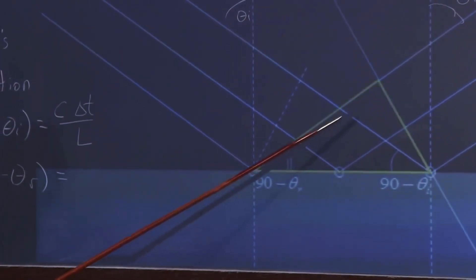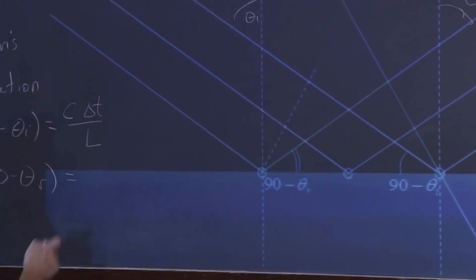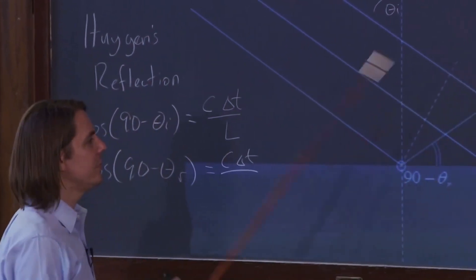That's this equivalent distance. So c delta t over the hypotenuse is L.